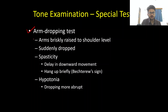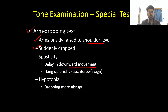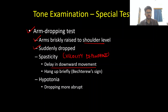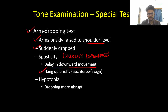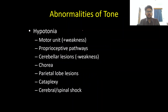The arm dropping test is somewhat similar to the Wartenberg pendulum test. The arms are briskly raised to shoulder level and then suddenly dropped. In spasticity, there is a delay in this downward movement. Spasticity is a velocity-dependent phenomenon — when we rapidly move the joint, spasticity is better appreciated. This brief hang-up or catch when the arm is falling down is known as the Becherous sign. In hypotonia, the dropping is more pronounced.